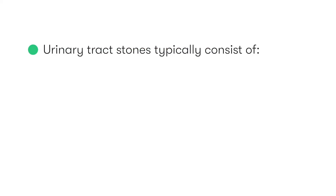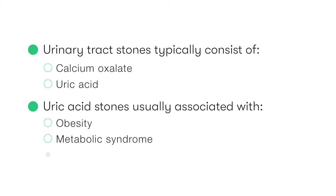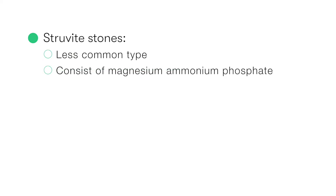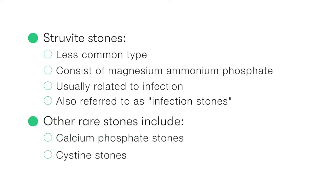Urinary tract stones are most commonly made of calcium oxalate and uric acid. Uric acid stones are typically associated with the presence of obesity and metabolic syndrome, as well as the presence of urine with a more acidic pH. Struvite stones are a less common form of stone; they're made of magnesium ammonium phosphate and are usually related to the presence of infection, so much so that people tend to refer to them as infection stones. Other rare types of stones include calcium phosphate and cystine stones.